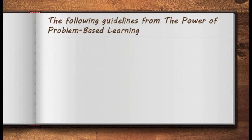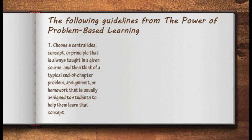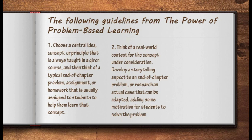The following guidelines come from the Power of Problem-Based Learning. First, choose an essential idea, concept, or principle that is always taught in a given course, and think of a typical end-of-chapter problem or homework assignment usually assigned to students to help them learn that concept. List the learning objectives that students should meet when they work through the problem. Second, think of a real-world context for the concept under consideration — develop a storytelling aspect to an end-of-chapter problem, or research an actual case that can be adapted, adding motivation for students to solve it. Look at magazines, newspapers, and articles for ideas; talk to professionals in the field searching for realistic applications of the concepts being taught.